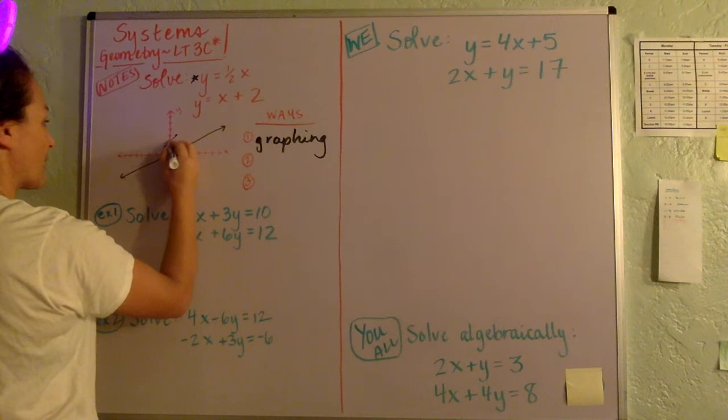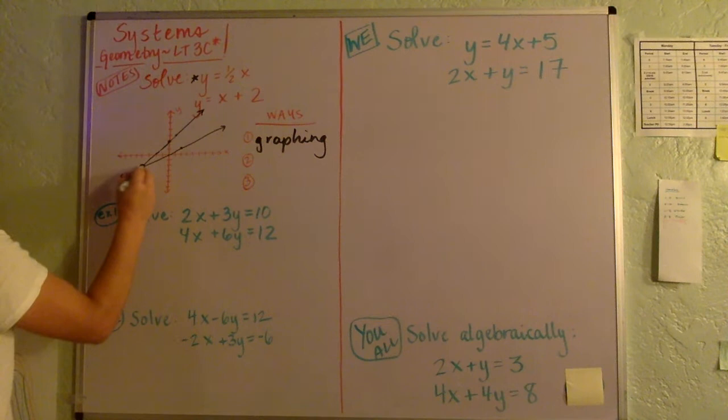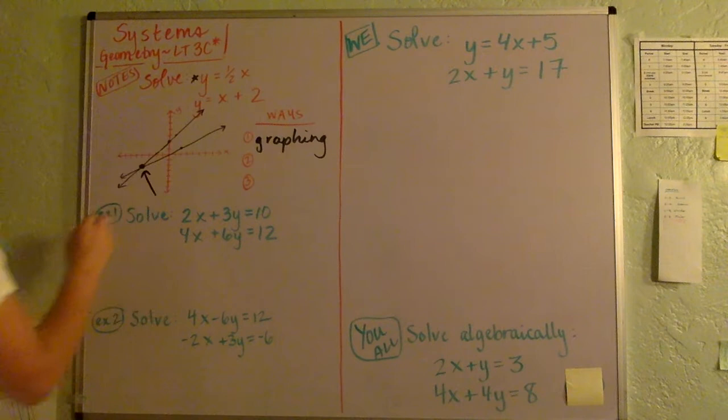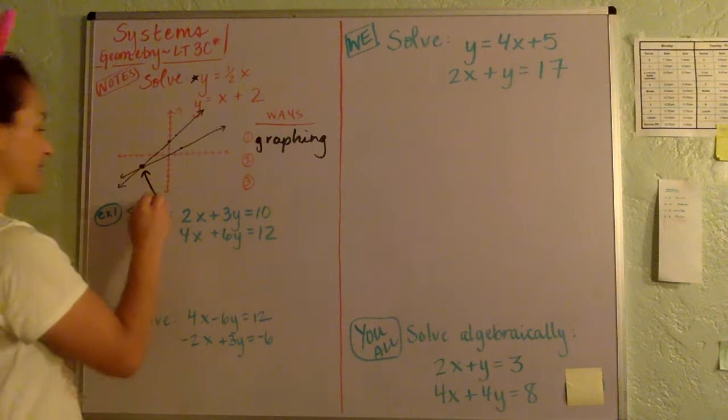And then I think you can see hopefully clearly that what we're solving for is the place where the two lines cross, which it looks like is right about right there. So this is one way to solve, and this is the solution right here. It's the point where the two lines cross. So you can solve with graphing.